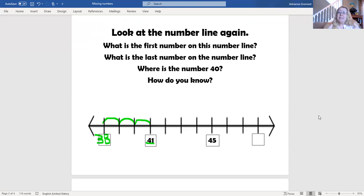Now, what is the last number on the number line? Well, I can see the number 45. So I know I need to count up this time to get to the last number. 45, 46, 47, 48. The last number is the number 48.